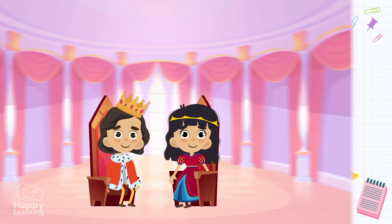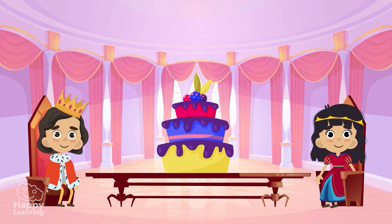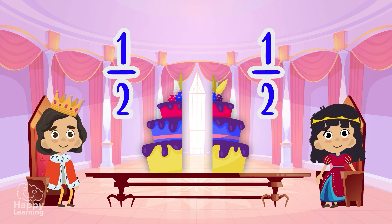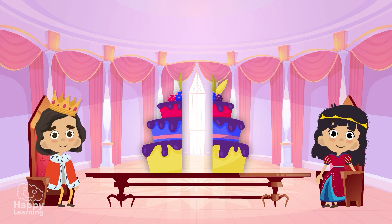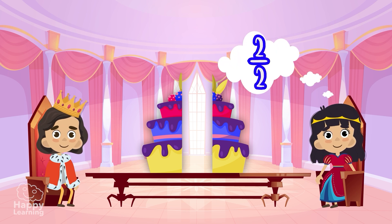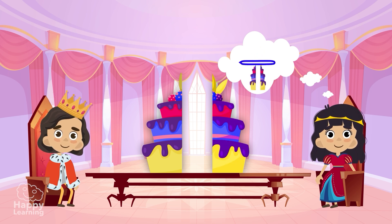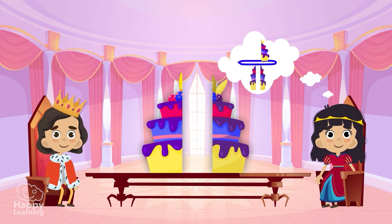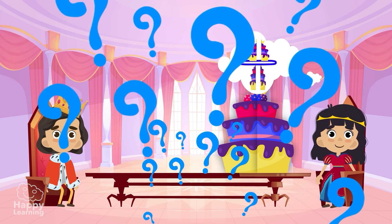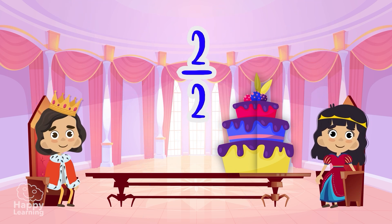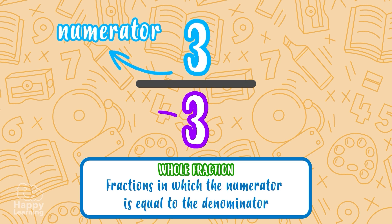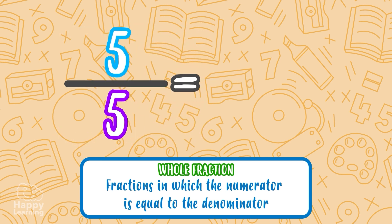For example, this cake. If we divide it exactly in half, each of the kings will get a half of the cake. What would happen if one of them, instead of one half of the cake, wanted two halves of the cake? Well, out of the cake divided into two parts, he would get this part and also this part. Wait a second! That's the whole cake! Do you know what happened? Two halves is a whole fraction! Whole fractions are those fractions in which the numerator is equal to the denominator.